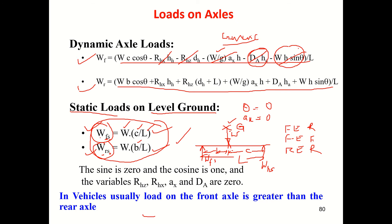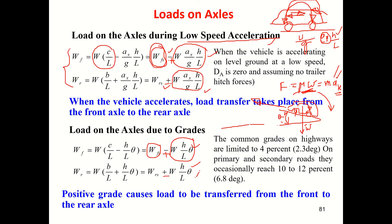We can place the front wheels on a weight balance and similarly the rear wheels, measure the loads, and from that we can find c and b values. If we then incline the vehicle and measure the theta value and the loads again...